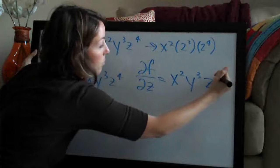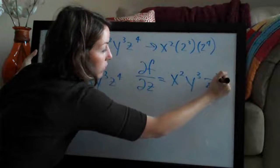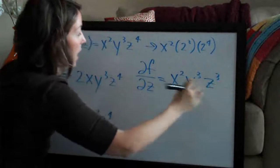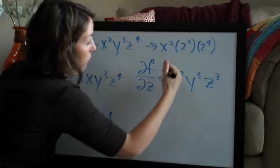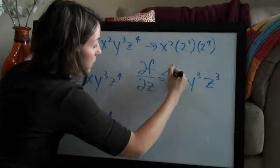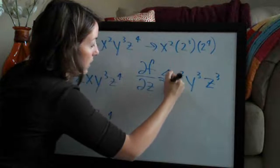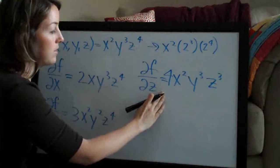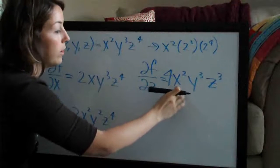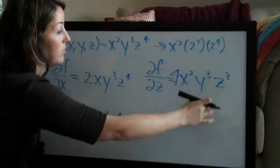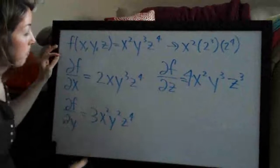The derivative — we subtract one from the exponent, so four minus one is three, and the four gets multiplied out in front. So our answer with respect to z is four x squared, y cubed, z cubed.